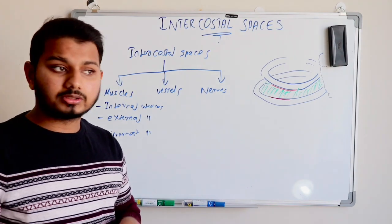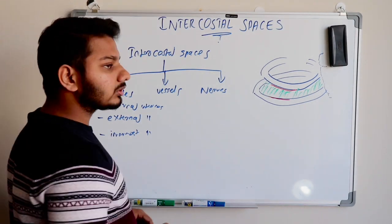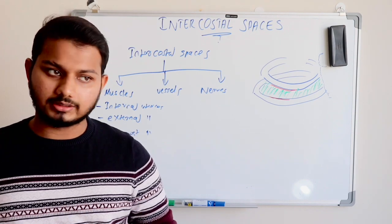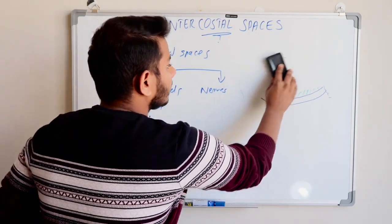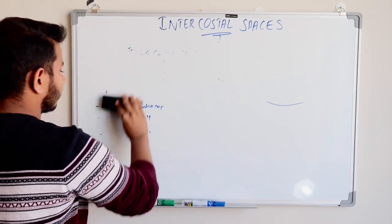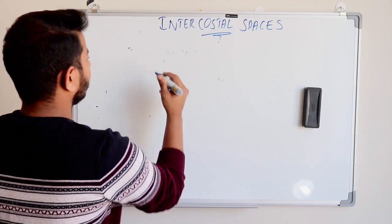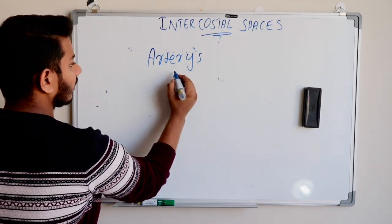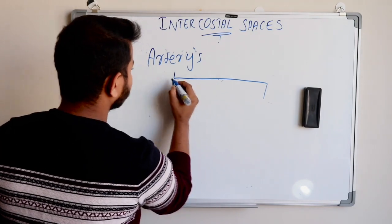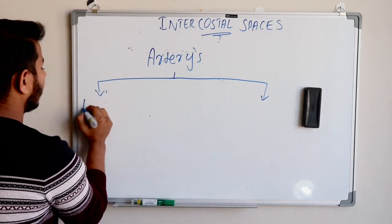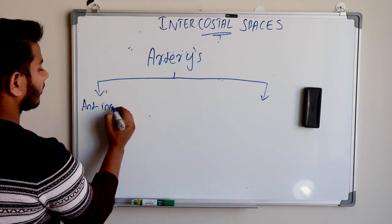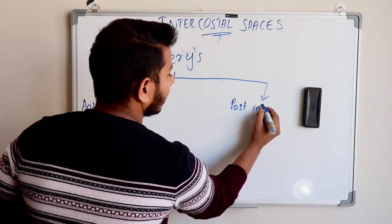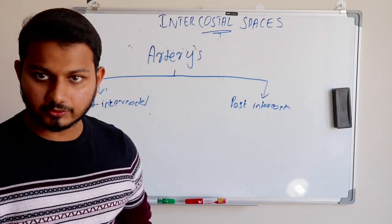The costal groove transmits intercostal arteries, intercostal nerves, and intercostal veins. Regarding arteries, there are two divisions: anterior intercostal artery and posterior intercostal artery.